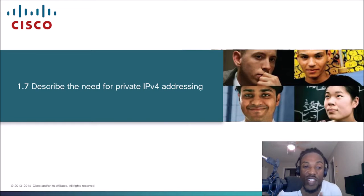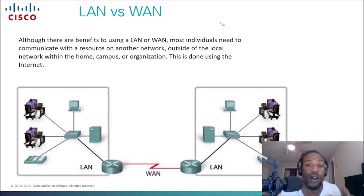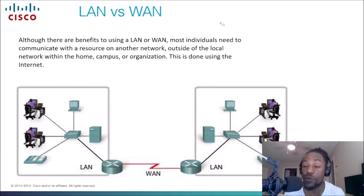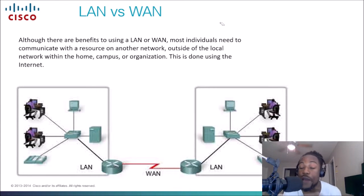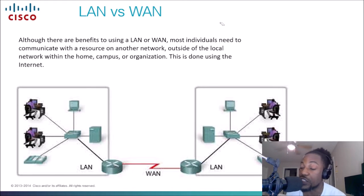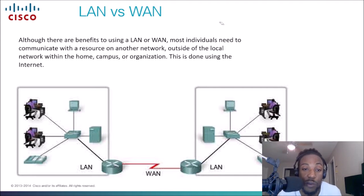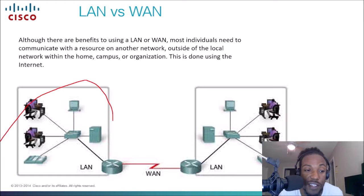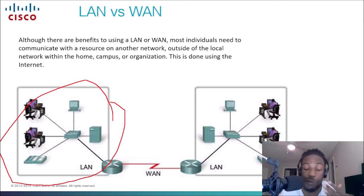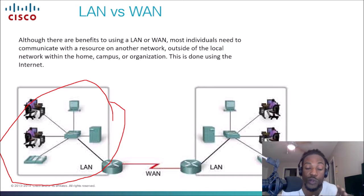Let's go ahead and talk about the need for private IP addressing. Before we do, we need to talk about the differences between LANs and WANs. A LAN is a local area network — it could be your school, your office, your home, or your building. That is your local area network.